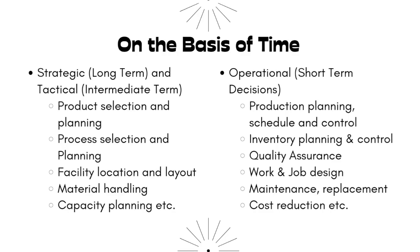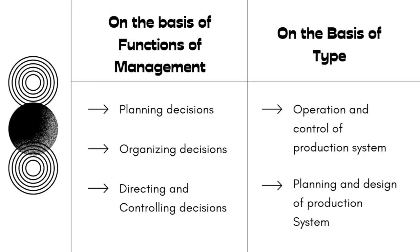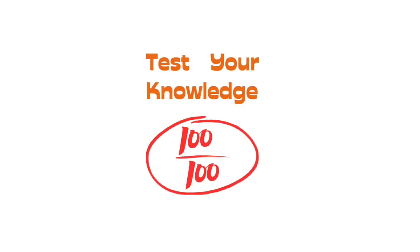So to summarize: long-term is strategic, intermediate-term is tactical, and short-term is operational. When you see a question about operational decisions, it means day-to-day short-term decisions. On the basis of the functions of management, you can think of decisions as planning decisions, organizing decisions, and direction and control decisions. On the basis of type, you can think of them as operation and control of a production system, or planning and design of a production system.